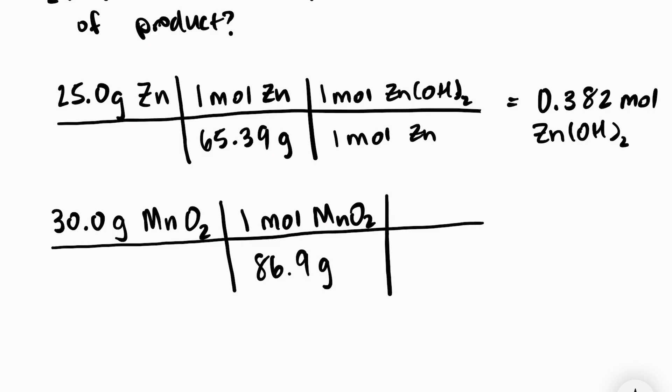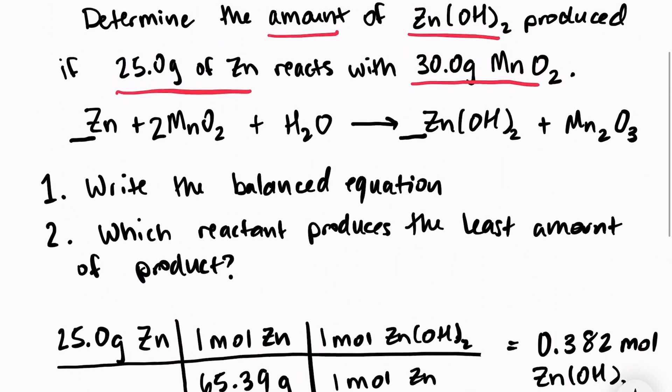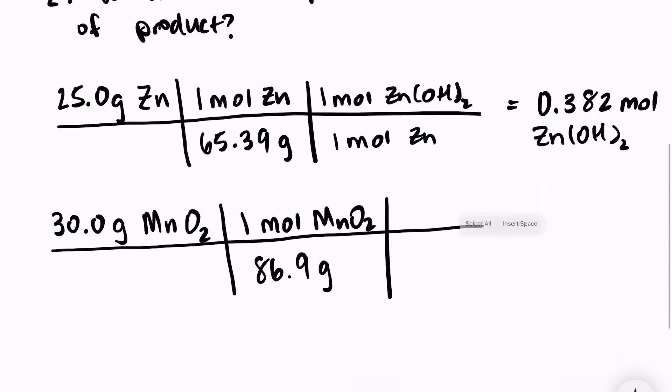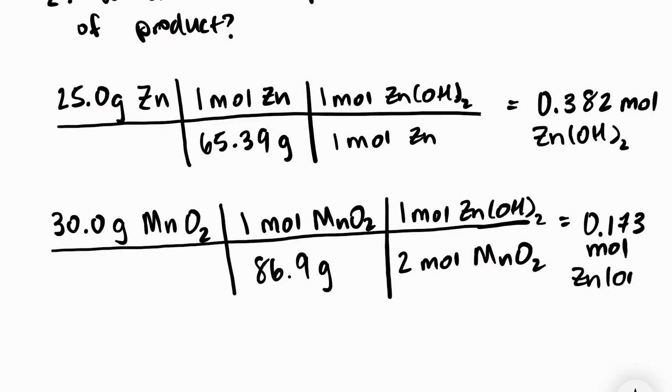And then the last step is to look at our molar ratios given our balanced equation. I have a coefficient of one still in front of my zinc hydroxide but now I have a coefficient of two in front of MnO2. So one mole of zinc hydroxide over two moles MnO2. So 30.0 divided by 86.9 divided by two which gives us 0.173 moles of zinc hydroxide.